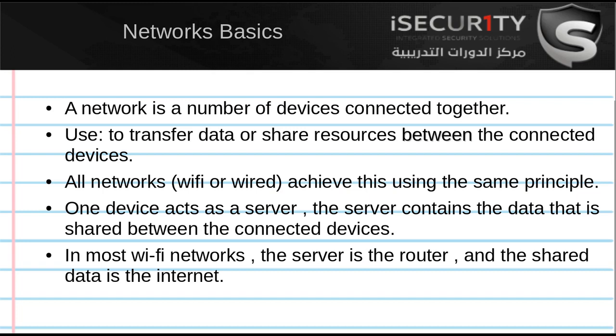So all networks — Wi-Fi or wired — achieve this sharing of data using the same principle: you need a device that acts as a server, and then all devices communicate with the server. The server has access to the resource, and all the other devices on the network that are connected to this server can access the data from the server.